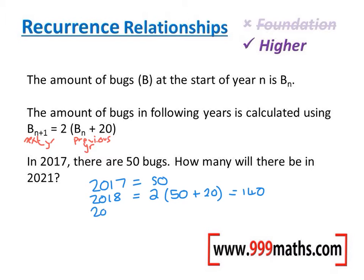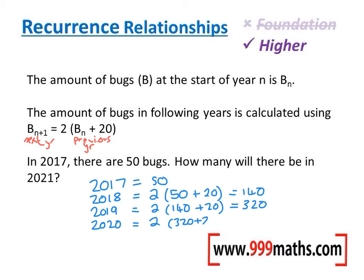So in 2019 we'll do that again. It's 2 lots of the previous year, which is now 140, then add 20. 140 add 20 is 160, doubled is 320. I'm going to keep going until we get to 2021 because that's what the question asked for. So in 2020 it's 2 lots of the previous year add 20. 320 add 20 is 340, doubled makes 680.